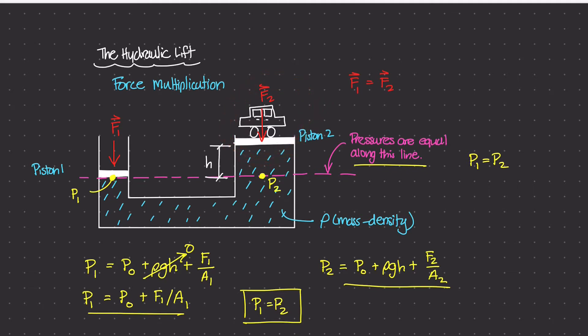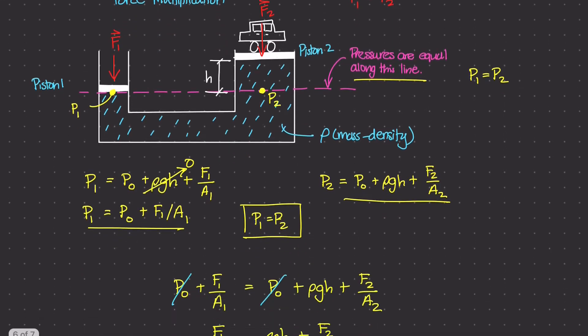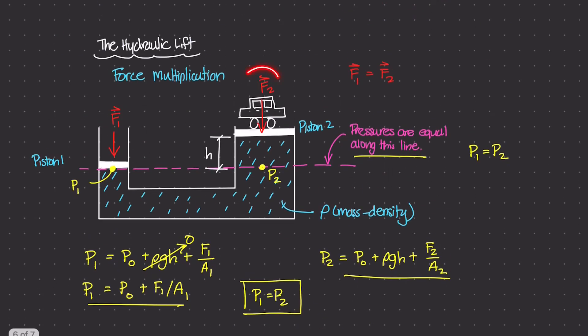And we use the concepts of force multiplication and hydrostatic pressure to basically get an equation that would tell us what force 2 is based off of H, based off of these two pressures along the same line here.